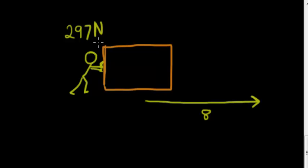It doesn't matter. The force he is applying is in the same direction. That 297 is in the same direction as the displacement. So what do we have?